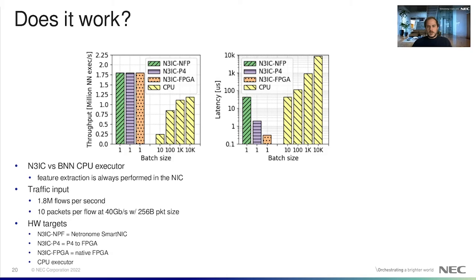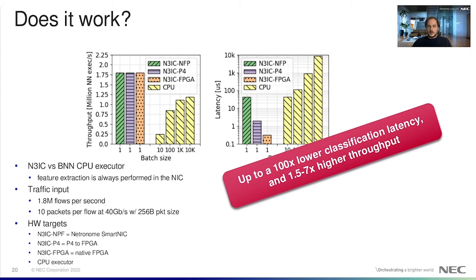NTRIC implementations can all achieve the offered throughput of 1.8 million flows analysis per second. Instead, even using larger batch sizes, the CPU is unable to cope with such load. The CPU can achieve a maximum throughput of 1.18 million analyzed flows per second, only when using very large batches of 10k flows. More interestingly, NTRIC implementations provide also low processing latency: 42 microseconds for NTRIC NFP, and only 2 and 0.5 microseconds for NTRIC P4 and NTRIC FPGA. In comparison, for the CPU executor to achieve a throughput above 1 million flows per second, the processing latency is 1 millisecond and 8 milliseconds with batch size of 1k and 10k.